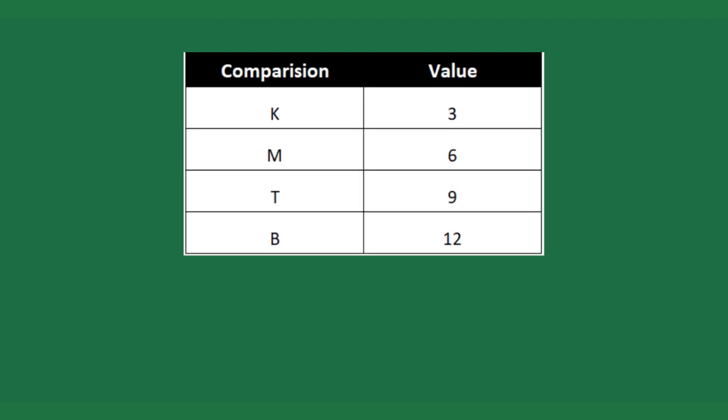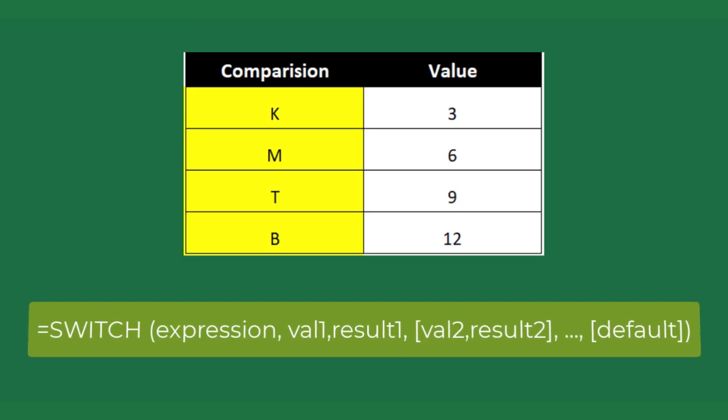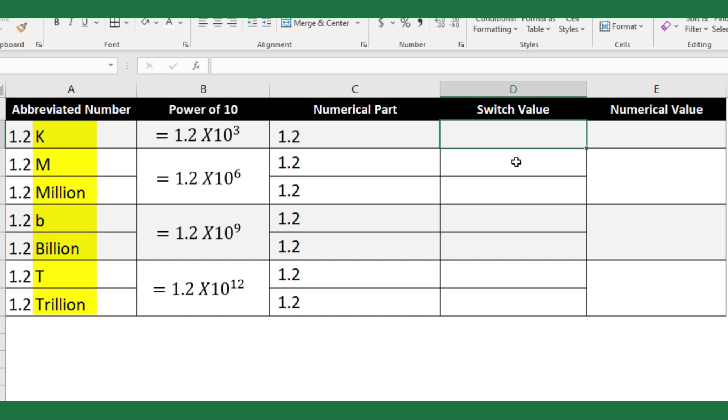The Excel SWITCH function compares one value against a list of values and returns a result corresponding to the first match. SWITCH can return an optional default value when no match is found. Here, I need to compare the suffix letters against the power of ten. Hence, equal SWITCH.